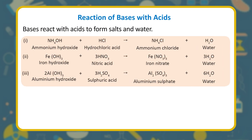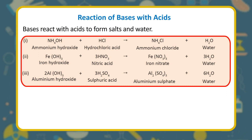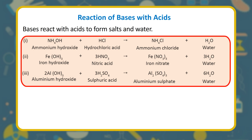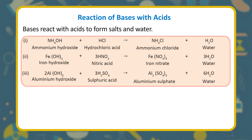Reaction of bases with acids: bases react with acids to form salts and water. For example: NH₄OH + HCl → NH₄Cl + H₂O; Fe(OH)₃ + 3HNO₃ → Fe(NO₃)₃ + 3H₂O; 2Al(OH)₃ + 3H₂SO₄ → Al₂(SO₄)₃ + 6H₂O.